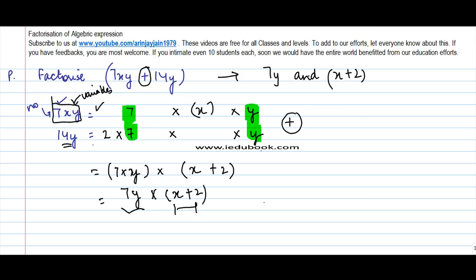If you multiply these two, what you will get is this. You want to try it out? Let's say 7y into x will give you 7xy, plus 7y into 2 will give you 2 into 7 gives you 14 and y, which is nothing but this number. So that's how you do factorization through common factors.